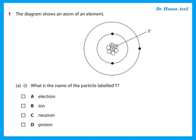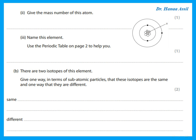The first question shows a diagram of an atom and asks for the name of the particle labeled Y. The particle labeled Y is the positive particle in the nucleus, so that is a proton. To give the mass number of this atom, we add up everything in the nucleus: three positives and four neutrons gives a total of seven.